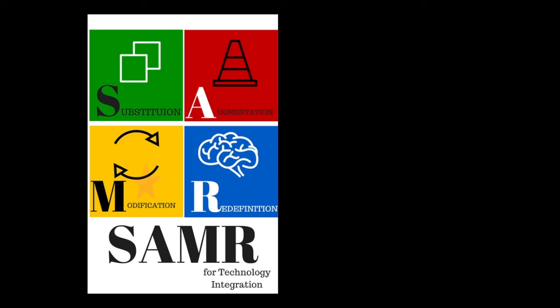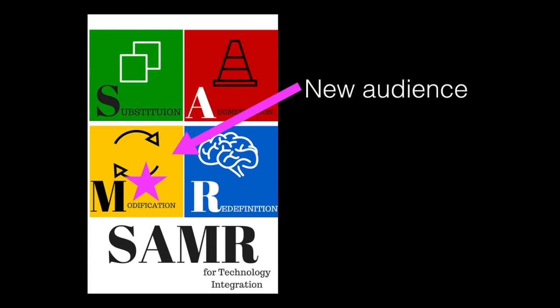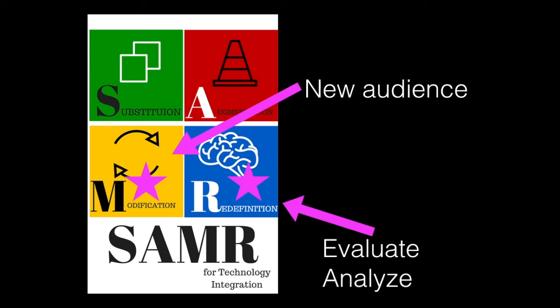Based on the SAMR model, modification has occurred. There is a potential new audience beyond the four walls of a classroom. Additionally, redefinition has been reached. Students have evaluated and analyzed their choices and the information in front of them. Then they have done more than list bulleted information because they have created a new presentation.